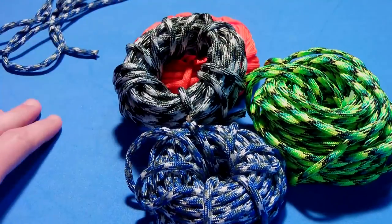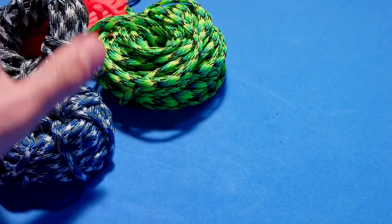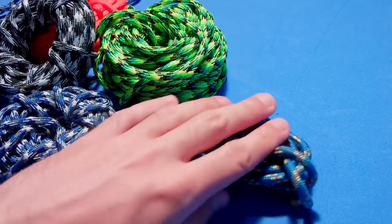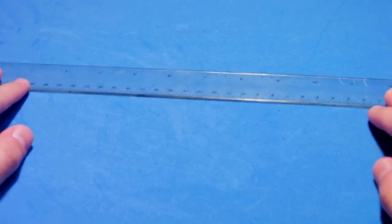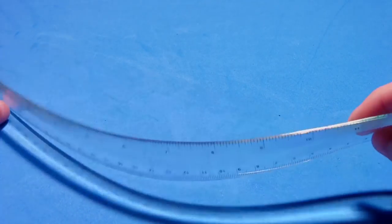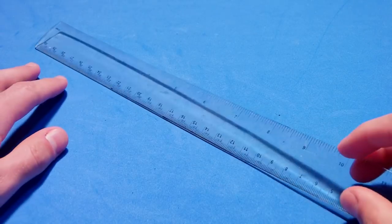Rescue orange, gecko blue, camo, urban camo, it's just an example of colors that you can find in paracord. Of course, you can do this using other types of cordage, it's up to you. Personally, I prefer paracord.